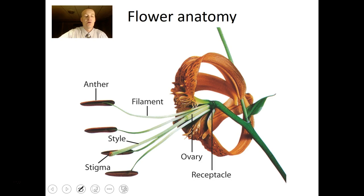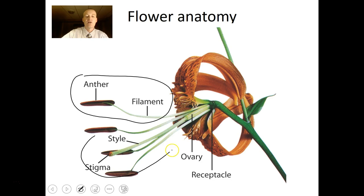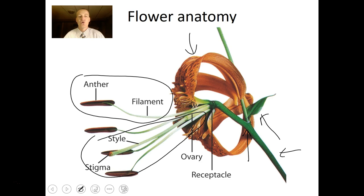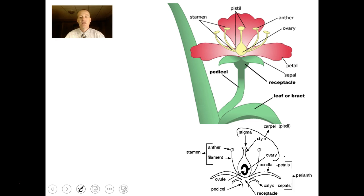This is a typical flower — something like a tiger lily. You're familiar with the male part: the anther and the filament. The female part is made up of the stigma, the style, and the ovary. Flowers also sometimes have petals, sepals, a receptacle, and a stem. You should be able to draw and label a generic flower.